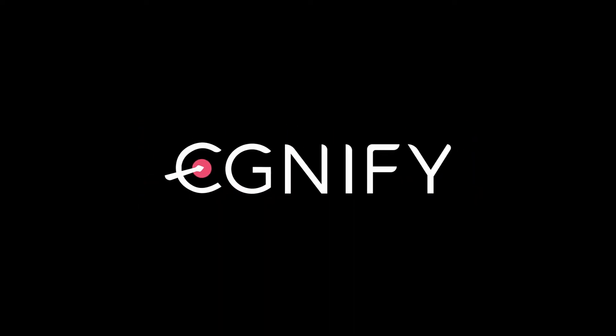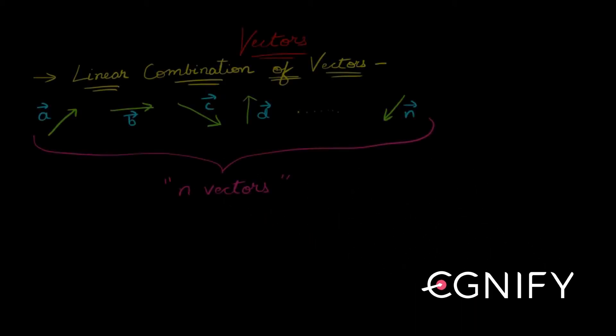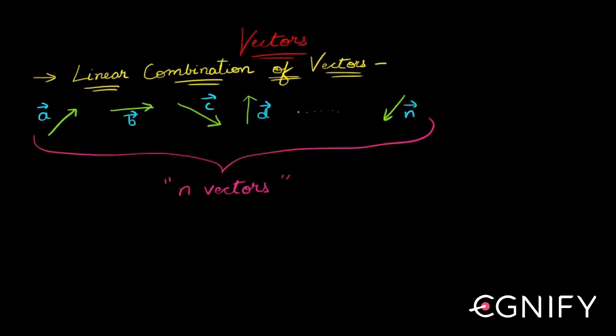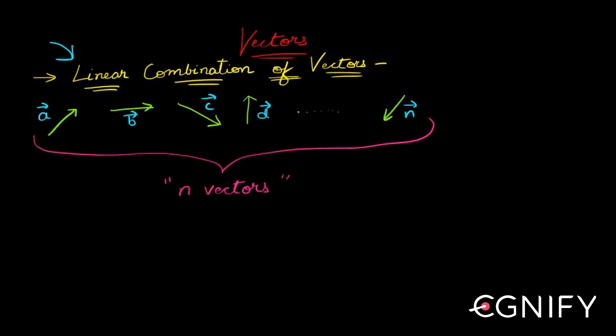We've already seen a few operations on vectors, a few types of vectors, how vectors are represented in three-dimensional space. We've seen an overview of vectors as far as our point of view is concerned. We will now move on to this very interesting topic called linear combination of vectors.